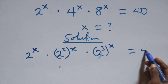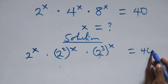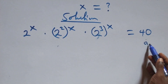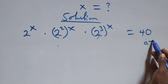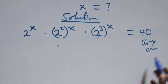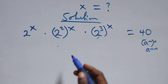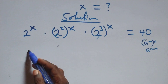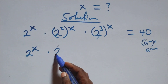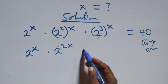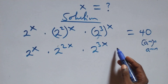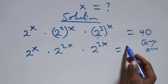Then the right side equals 40. We use the rule that a raised to power m raised to power n is the same as a raised to power m times n — the powers multiply. So we have 2 raised to power x, times 2 raised to power 2x, times 2 raised to power 3x, equals 40.